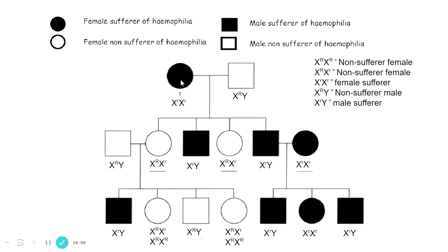For sex-linked conditions, female sufferers will have two recessive alleles, while affected males only need one recessive allele. Unaffected females can be homozygous dominant or heterozygous, and an unaffected male must carry the dominant allele. These genotypes can then be plugged into the pedigree cross.